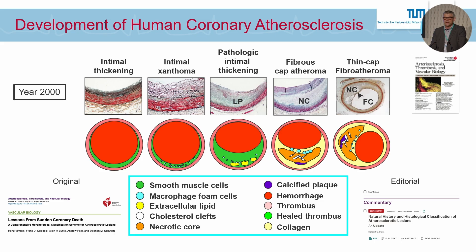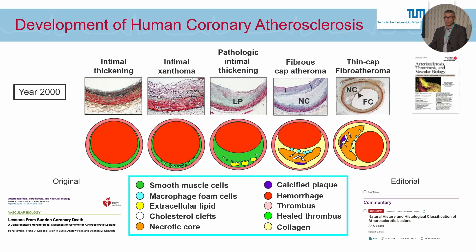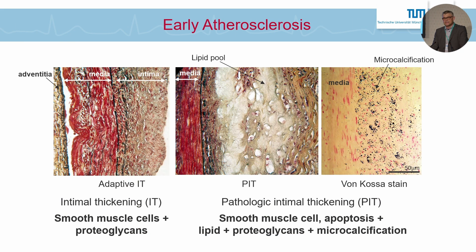And now this time, the classification that most of you have seen — starting from intimal thickening all the way to thin-capped fibroatheroma — was born and was termed with this new AHA classification. Now let's look at these lesions just so that we get a better understanding for what we do with our drug-coated balloons later on.